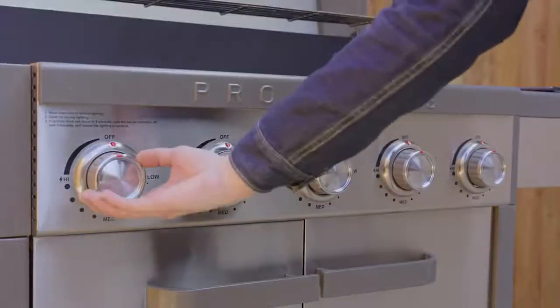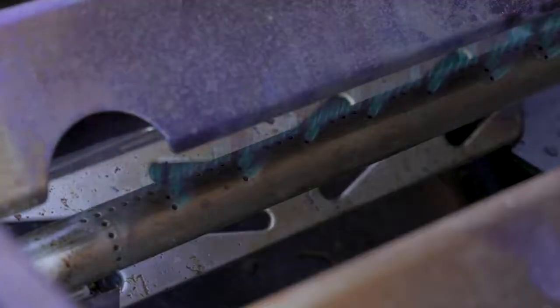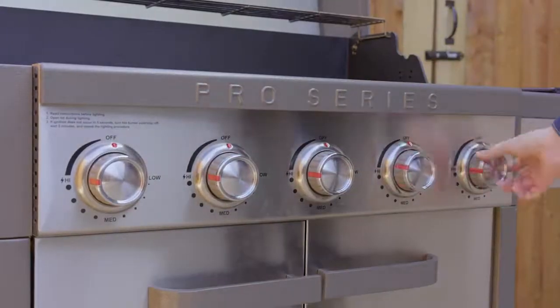Turn the first control knob to the high position. Press the electronic ignition button or use a barbecue lighter to ignite the burner. Proceed with lighting all remaining burners.